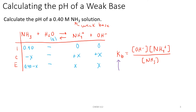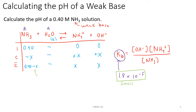For ammonia, looking up that value, you should find 1.8 × 10⁻⁵ for the Kb. Make sure you're looking on the base side and not the acid side, because you'll notice that ammonia could function as an acid or a base, being amphoteric. But we want the base ionization constant because ammonia is functioning as the base in this example. Also notice that the Kb value is small — 10⁻⁴ or smaller — and that means we get to use our simplifying assumption and ignore the minus x, so 0.40 minus x just becomes 0.40.